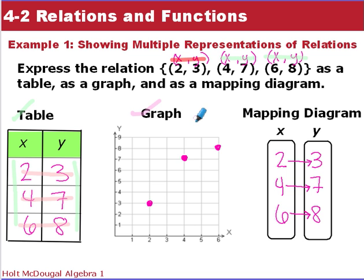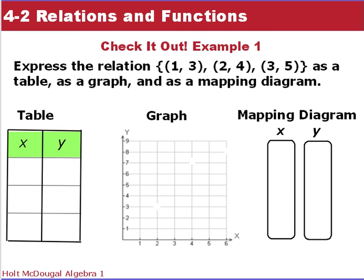A mapping diagram is just what it says. Maps our x-coordinates to our y-coordinates. So we list our x-coordinates out, and then we have the 2 maps to 3, 4 to 7, and 6 to 8. And now it is your turn to do the same thing. You have 3 ordered pairs. Express them in a table, as a graph, and as a mapping diagram.